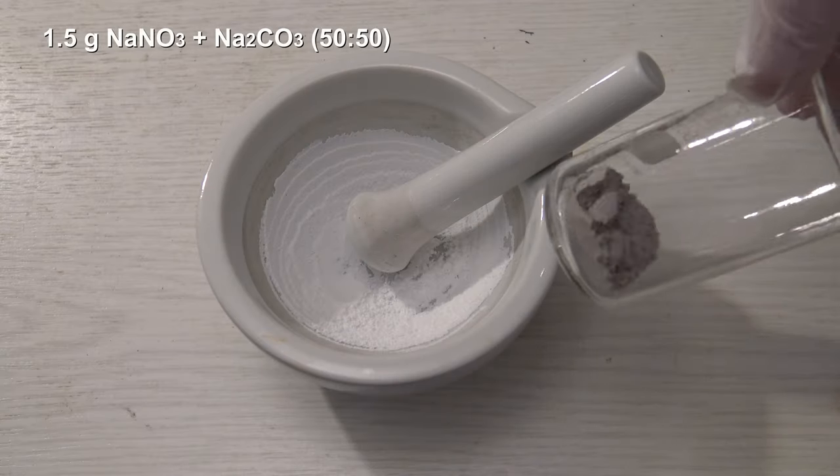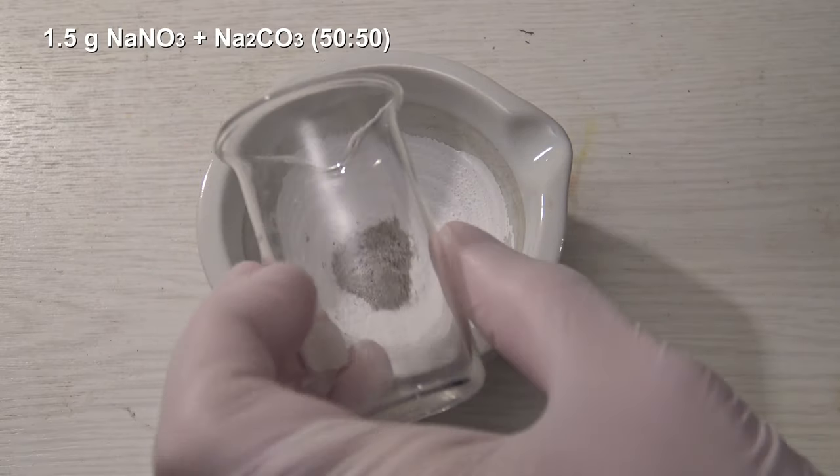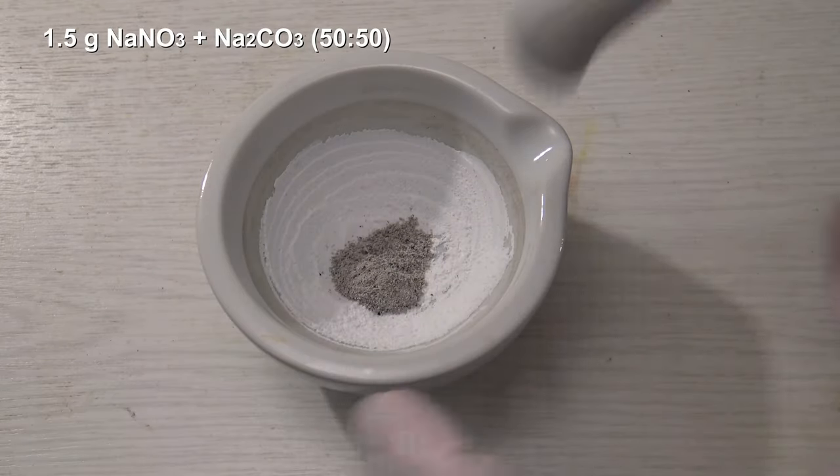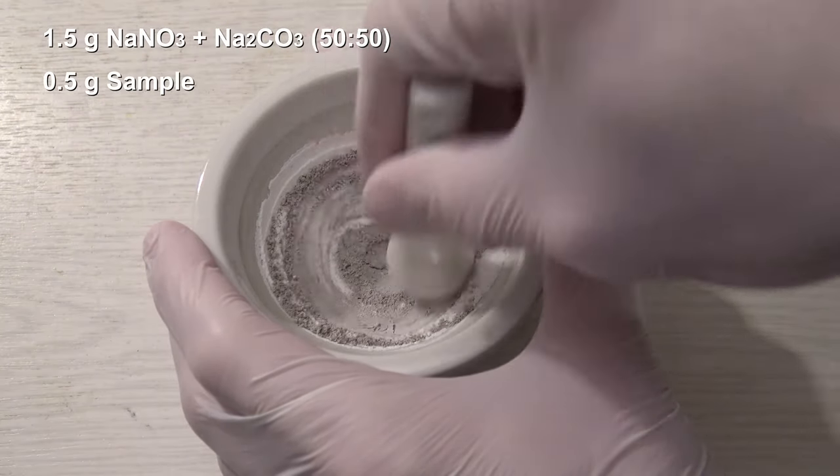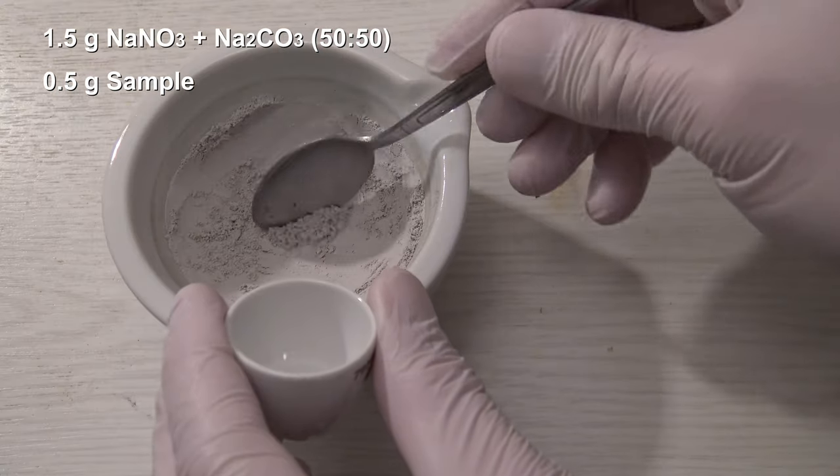Next, 1.5 grams of a mixture were already prepared in a mortar, which consists of same amounts of sodium nitrate and sodium carbonate. To this, 0.5 grams of the sample were added, the mixture crushed again and transferred to a porcelain crucible.